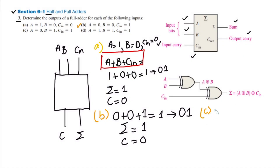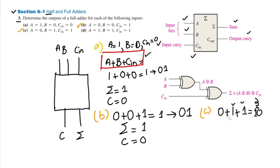For part c, A is equal to 0, B equal to 1, and C-input equal to 1. Writing these values into the formula: 0 plus 1 plus 1. In decimal this is 2. The binary equivalent of 2 is 1 0. So the sum here is 0 — the rightmost bit — while the carry bit is 1.